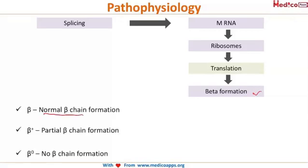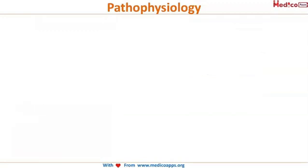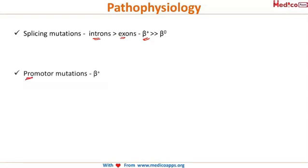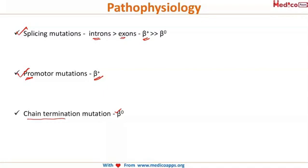Whenever there is normal beta chain formation it is represented as beta, and whenever there is no beta chain formation it is represented as beta-0. Splicing mutations — especially in the introns — and promoter region mutations result in partial beta chain formation. Chain termination mutations result in no beta chain formation at all.